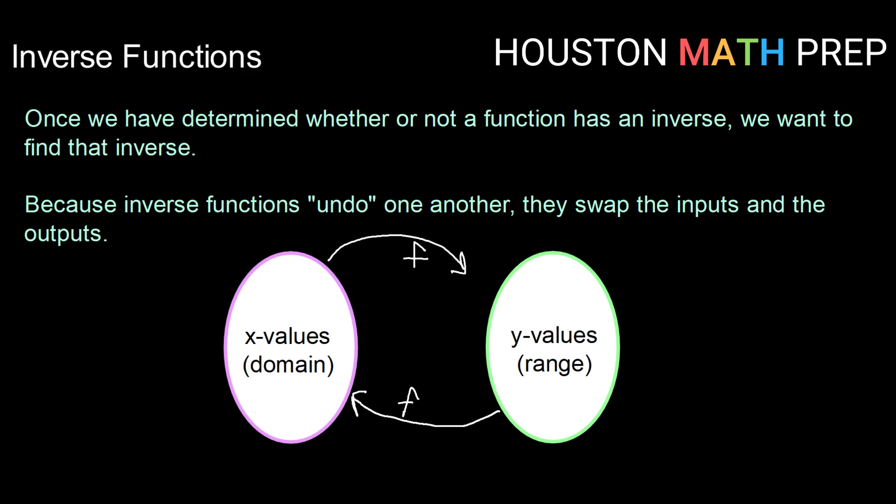So notationally we call inverses f inverse and we put this little almost like a negative one power. And so then we get this set of functions f(x) and f inverse of x that undo one another. So we swap the inputs and the outputs or we can think swap the x's and the y's.